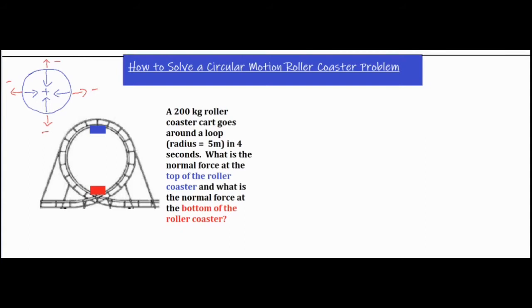Let's look at the first part of the problem — the normal force at the top of the roller coaster. If we draw our force diagram, we have the force of gravity pulling straight down as usual, and the other force acting on the person is the normal force from the seat, which is also pointed downwards, because the seat pushes perpendicular against the person and since they're upside down it pushes in the downward direction. This means both forces are in the positive direction.